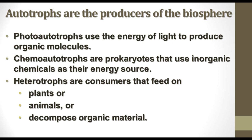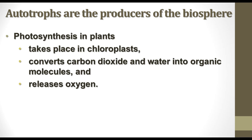Photo-autotrophs — the 'photo' part means light — use the energy of light to make their organic molecules, like plants, algae, and other photosynthetic organisms. There are also chemo-autotrophs, certain prokaryotes that use inorganic chemicals like hydrogen sulfide as an energy source. Heterotrophs are consumers that feed on plants or animals or decompose organic material. So plants are photo-autotrophs, animals are heterotrophs, and certain bacteria are chemo-autotrophs.